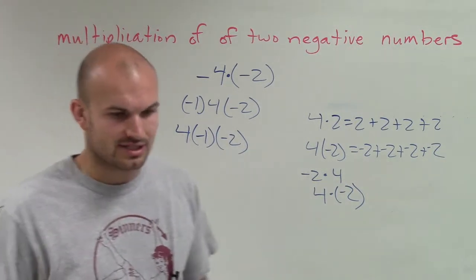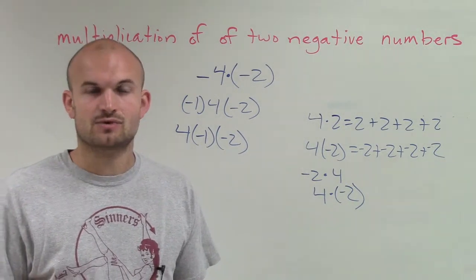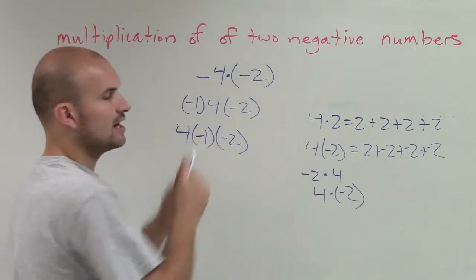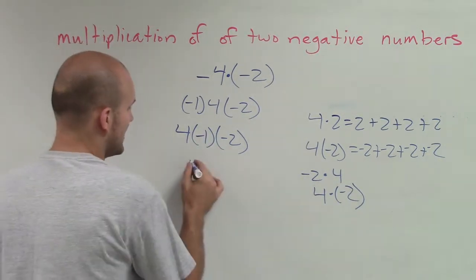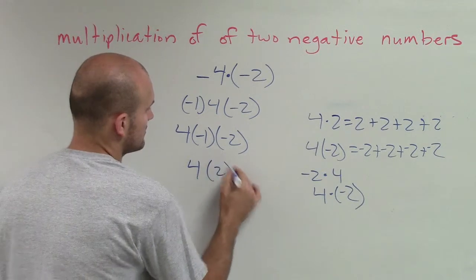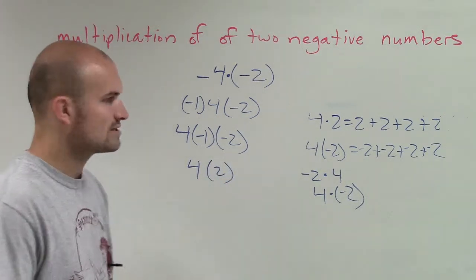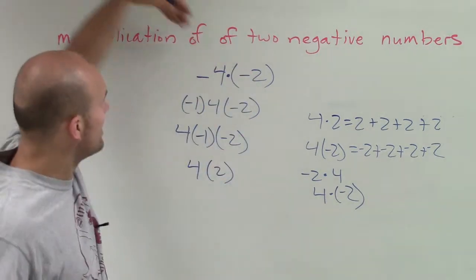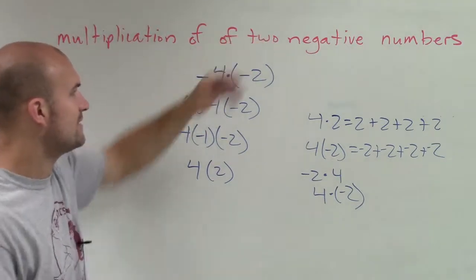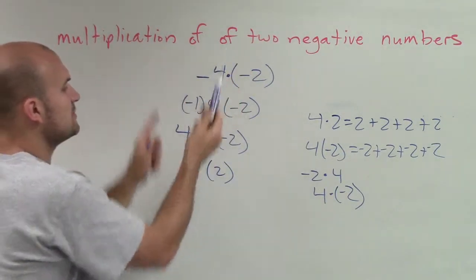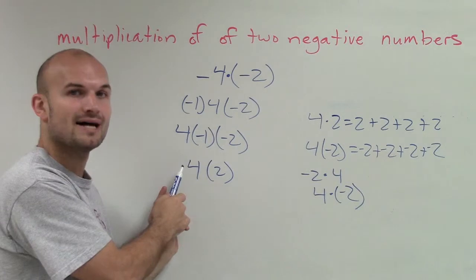Well, negative 1 is just the same thing as your negative sign, which means the opposite. So what's the opposite of a negative 2? That is a positive 2. So it's 4 times 2. Now you can see the multiplication of two negative numbers. When you have two negative numbers, we can treat it like two positive numbers.